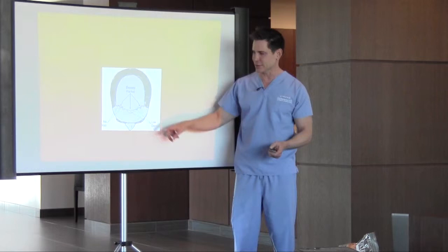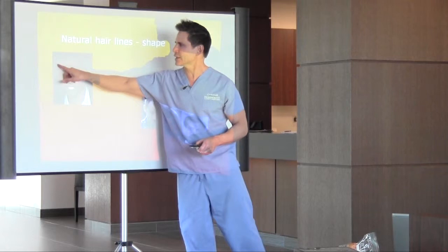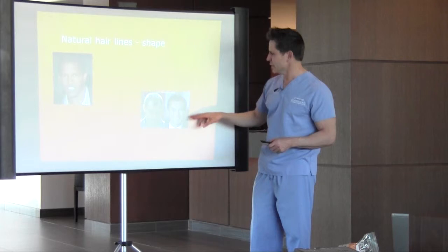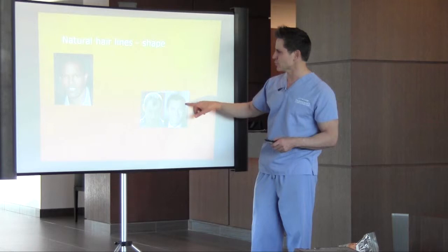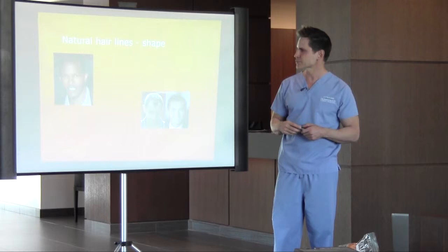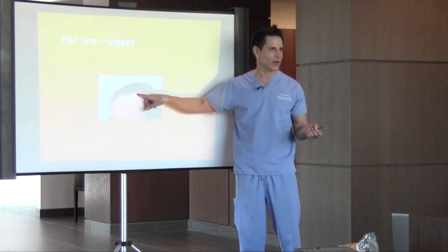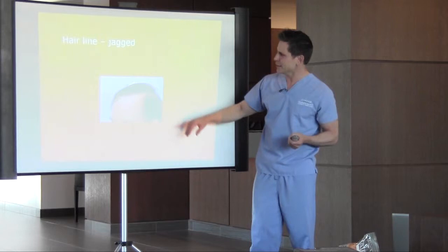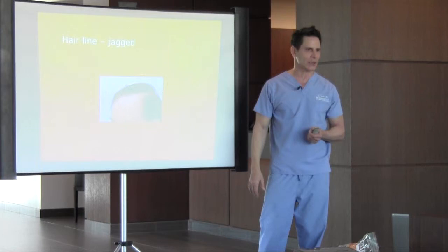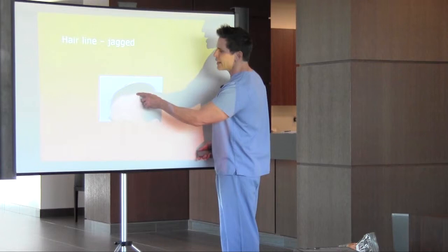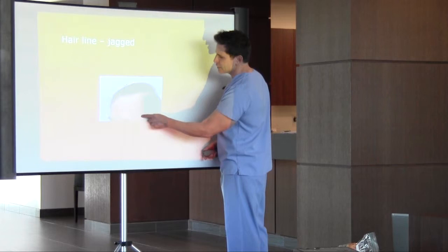You can see differences in hairlines here — Jamie Foxx has a straight hairline reflecting ethnic variation. Jude Law has temporal recession, and in a later photo he may have had a transplant that softened the area while keeping a little temporal recession, so it still looks natural. Then here's one that doesn't look natural — they used clusters of hairs instead of single hairs at the front, and the hairline is too straight, giving it a beanie-like appearance.